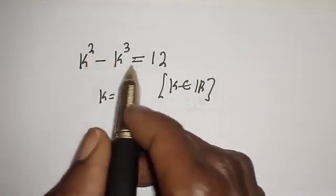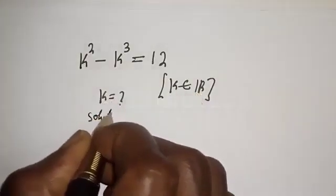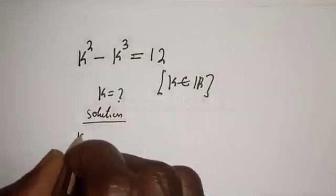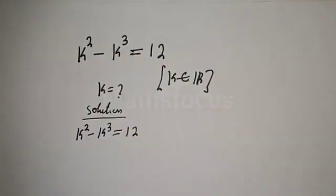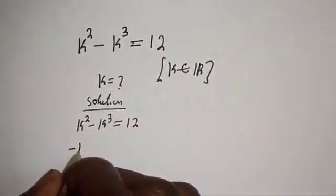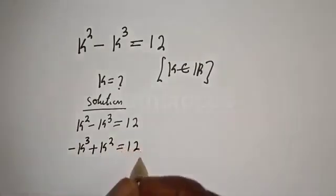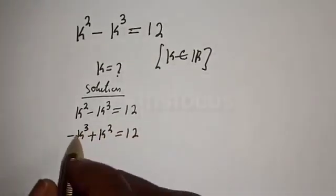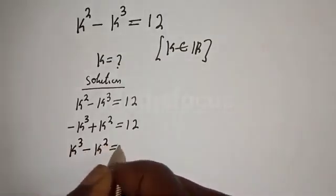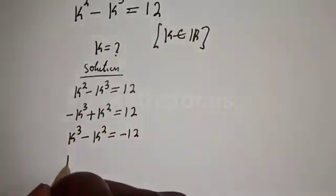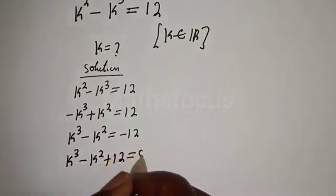k squared minus k raised to power 3 is equal to 12. What is the value of k, where k is a member of the real numbers? We can rearrange this: we have minus k raised to power 3 plus k squared is equal to 12. Multiplying all through by minus 1, we get k raised to power 3 minus k squared is equal to minus 12, so k raised to power 3 minus k squared plus 12 is equal to 0.